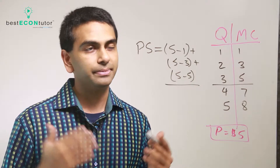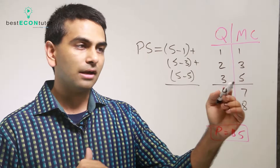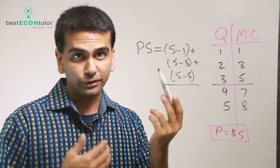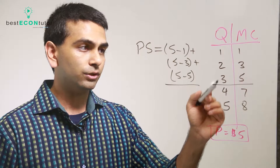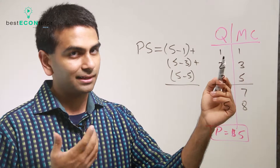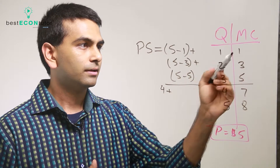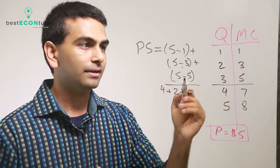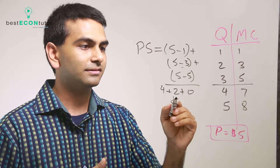If you're maximizing profit, which any rational person would, then you would stop producing at three. So as a producer in this market, assuming you're being rational, you'd stop producing at three. Your producer surplus — meaning kind of like profit — would be four dollars for the first item, two dollars for the second item, and zero for the third item. Overall your producer surplus is six dollars.